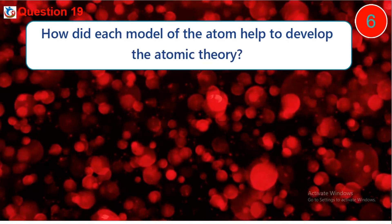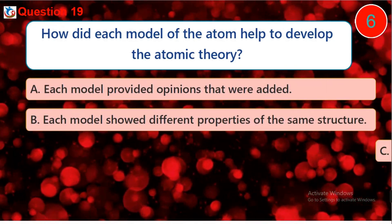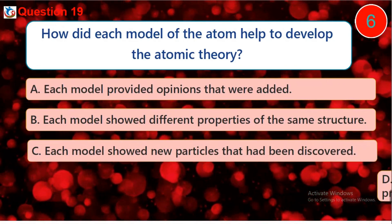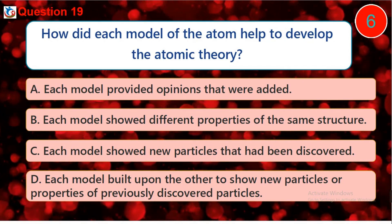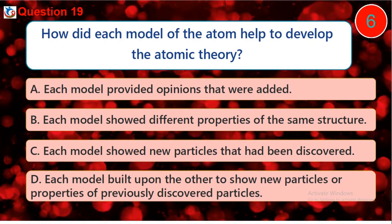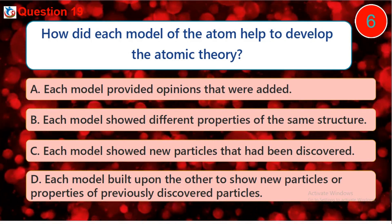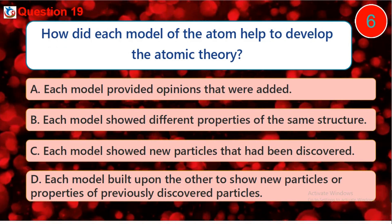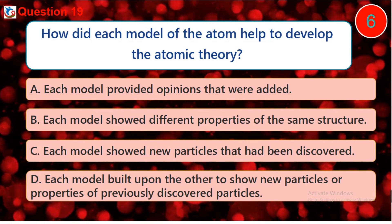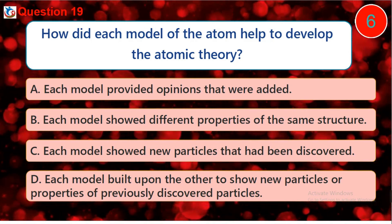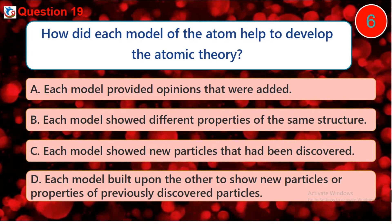Question 19. How did each model of the atom help to develop the atomic theory? A. Each model provided opinions that were added. B. Each model showed different properties of the same structure. C. Each model showed new particles that had been discovered. D. Each model built upon the other to show new particles or properties of previously discovered particles.